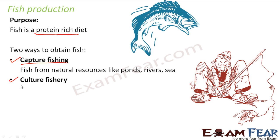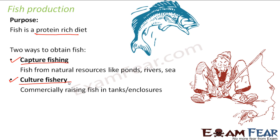The other method is culture fishery, which means commercially raising fish in tanks or enclosures. The demand for fish could not be met by capture fishing alone. So they started culture fishery — taking a few fishes and putting them in a tank with water. Those fishes will live there, reproduce, and give birth to new fishes, making that tank a source of more fish. So one is capture fishing from natural resources, and the other is culture fishery, which is an artificially created area where fishes reproduce and provide more fish.